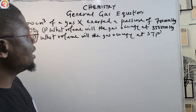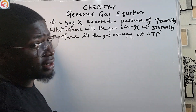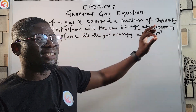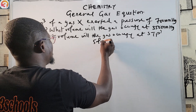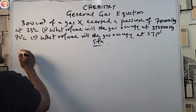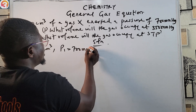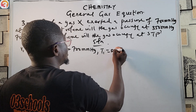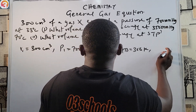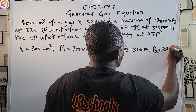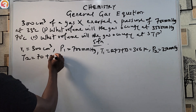We are given that 300 cm³ of a gas X is at a pressure of 700 mmHg at 33°C. We are asked: what volume will the gas occupy at 350 mmHg and 70°C? So: V1 = 300 cm³, P1 = 700 mmHg, T1 = 273 + 33 = 306 K, P2 = 350 mmHg, and T2 = 70 + 273 = 343 K.